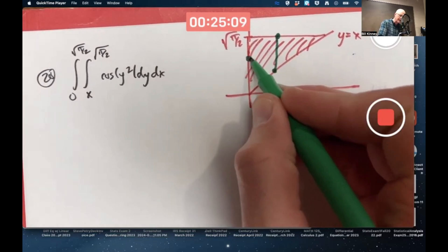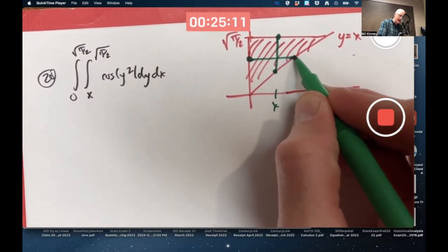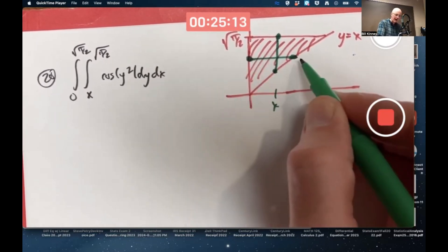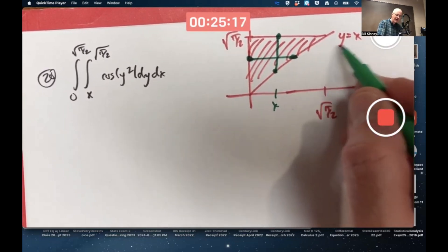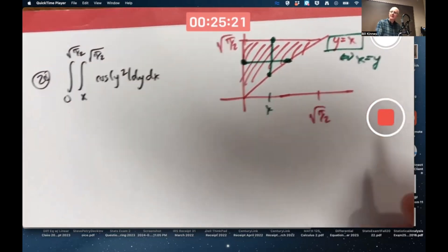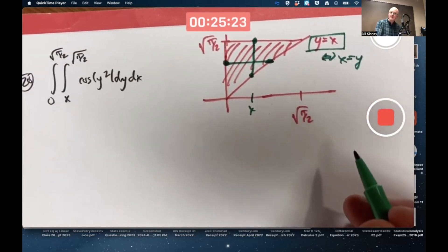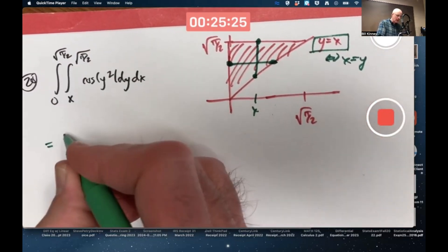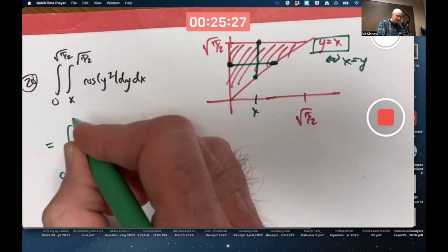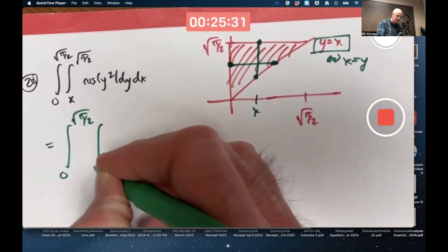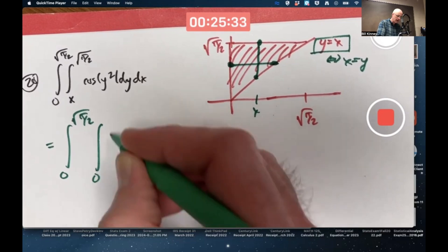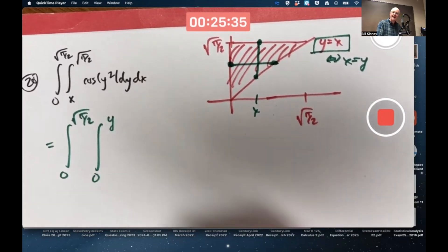For any fixed y between zero and square root of pi over two, x goes between two functions of y, one of which is zero, and the other one of which is y, because y equals x is equivalent to x equals y. Not much solving to do there. So the other order, it's still amazingly the same bounds for the outer integral, but the inner one, you go from zero to y, not x to square root of pi over two.